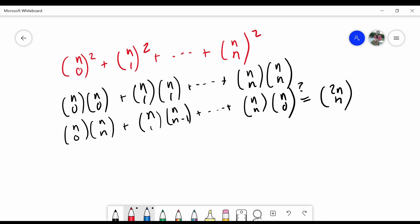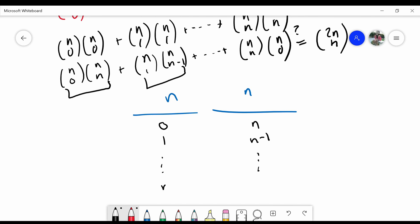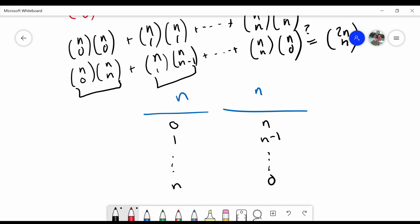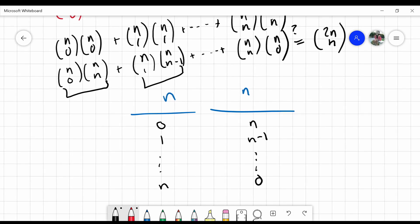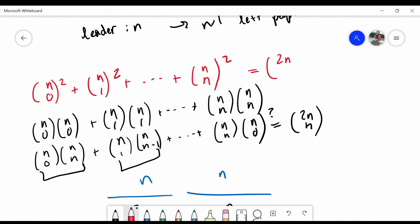We can think about it like this. We have a group of n and n people, and then we can choose 0 people from here and n people from here in the first term. In the second term, we can choose 1 person from the first group and n minus 1 people from the second group, and so on until we finally get our last combination. And so this left side should give us all the possible groups of n people from a total of n plus n people. So we conclude that indeed this sum here is equal to 2n choose n.